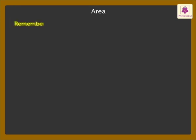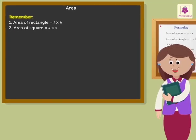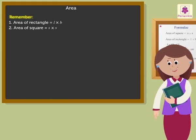Remember the formulas: 1. Area of a rectangle is equal to length into breadth. 2. Area of a square is equal to side into side. Kids, if you remember the formulas, then finding the area will not be difficult.